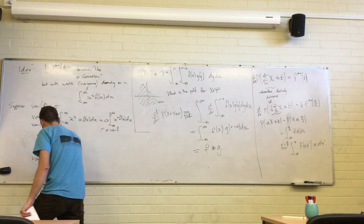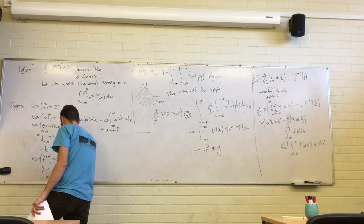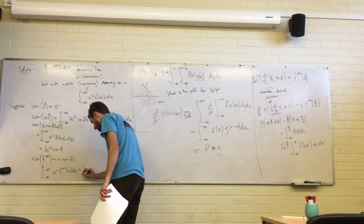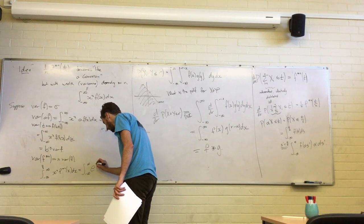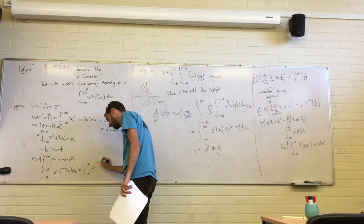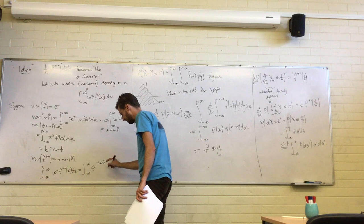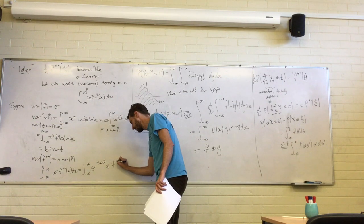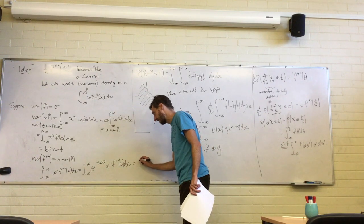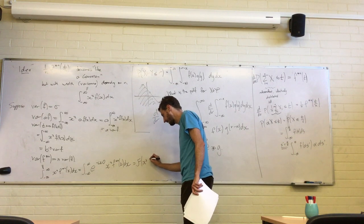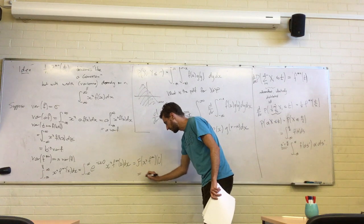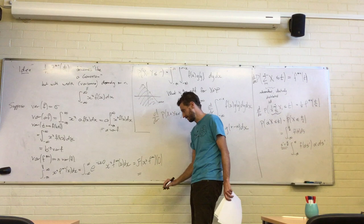So we can use the Fourier transform. The variance is the integral from negative infinity to infinity of x² times the convolution power — and that thing is just the Fourier transform of x² f^(*n) evaluated at xi equals zero. We can pull out the usual tricks: multiplication by x² inside the Fourier transform is the same as differentiation outside it.